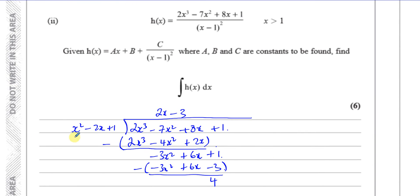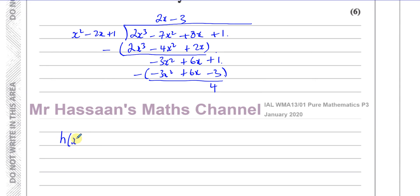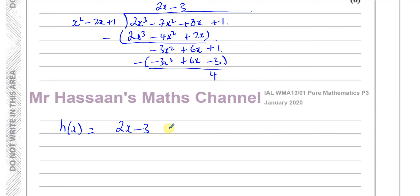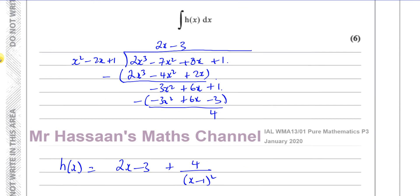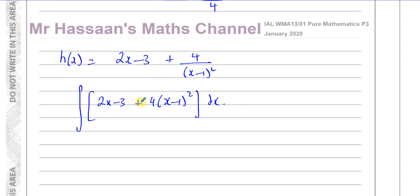So h(x) equals 2x minus 3 plus 4 over x minus 1 squared. Now we have h(x) in the required form. For the indefinite integral of 2x minus 3 plus 4 over x minus 1 squared, I'll rewrite the last term as 4 times x minus 1 to the power of minus 2, since it's squared in the denominator it becomes power minus 2.